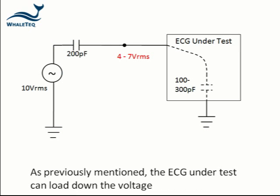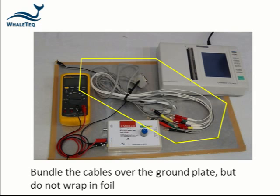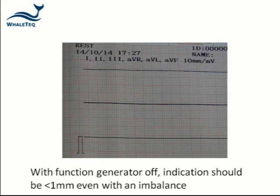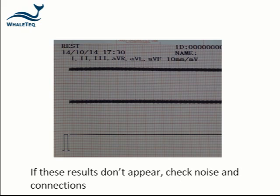As previously mentioned, the ECG can load down the voltage. This includes the stray capacitance from the cables. It is recommended to bundle the cable over the ground plate, but not to wrap it tightly in aluminium foil. After setting up, always check for expected test results. With the function generator off, we expect to see less than 1 mm on the ECG record, even in the imbalance condition. With the function generator on, we expect to see 2 to 7 mm on the ECG record in the leads affected by the lead electrode that has the imbalance. If these results don't appear, check for noise and connections.